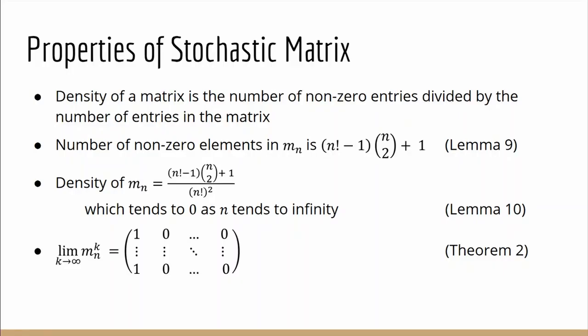We then proceed to prove more properties of the stochastic matrix. We found that its density, that is the number of non-zero entries divided by the size of the matrix, is as shown here and tends to zero as n tends to infinity. We also found that M_n to the power of k tends to the matrix shown here as k tends to infinity.